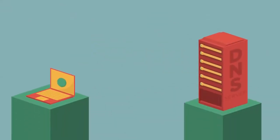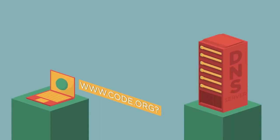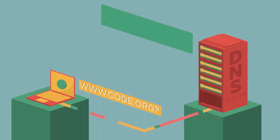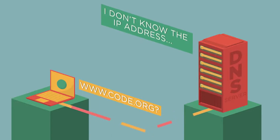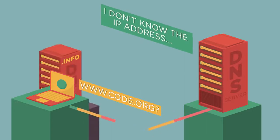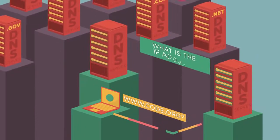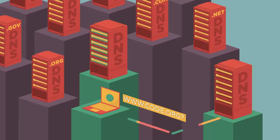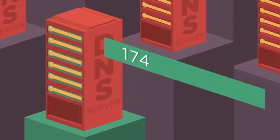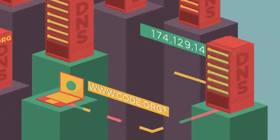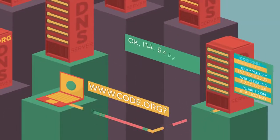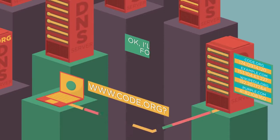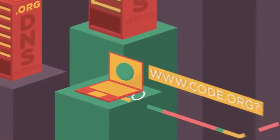Then it goes a little something like this. 'I want to go to www.code.org.' 'I don't know the IP address for that domain. Let me ask around.' 'You know how to get to code.org?' 'Yeah, I got it right here. It's 174.129.14.120.' 'Okay, great. Thanks. I'm going to write that down and save it for later in case I need it.' 'Here's that address you wanted.' 'Awesome, thank you.'